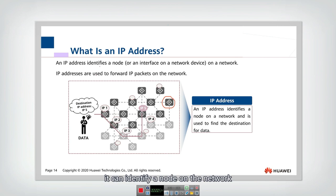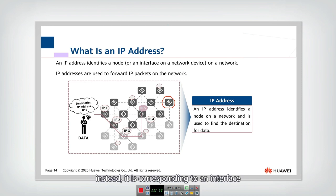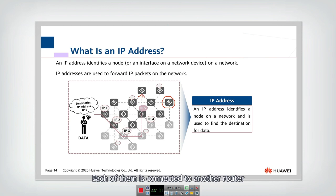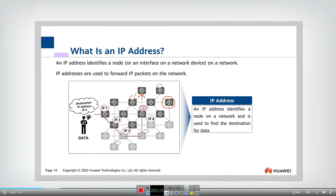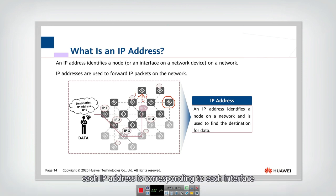It can identify a node on the network. Actually, it is not corresponding to a node - instead, it is corresponding to an interface. For example, if this router has three interfaces, each of them connected to another router, so this router will not have only one IP address. Instead, it will have three IP addresses, each IP address corresponding to each interface.